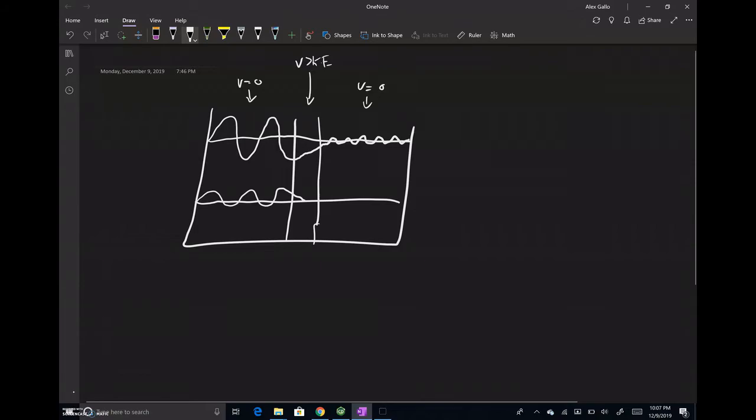And since this electron had a higher kinetic energy, it was able to overcome the potential barrier and end up on the other side of the box.